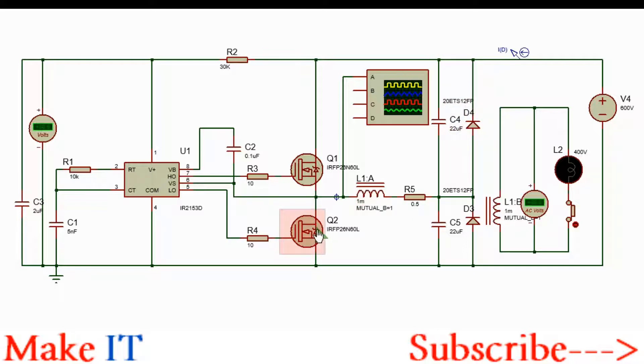Current will flow from the positive rail through C4, through the primary winding of the transformer, through the MOSFET Q2 into ground. It's a half bridge driver with all the cycles happening on the same winding, meaning you don't use two windings as in the case of a push-pull topology, and it can easily handle 1000 watts as desired.